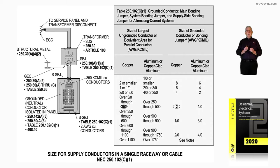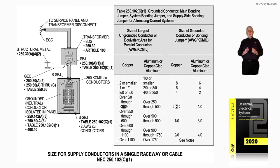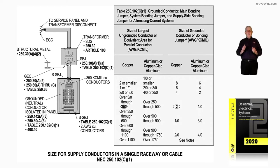In the table, we list copper and aluminum, which would be your ungrounded phase conductors entering into the service equipment. We would also give the conductor size in aluminum or copper to deal with sizing based upon the service entrance conductors.